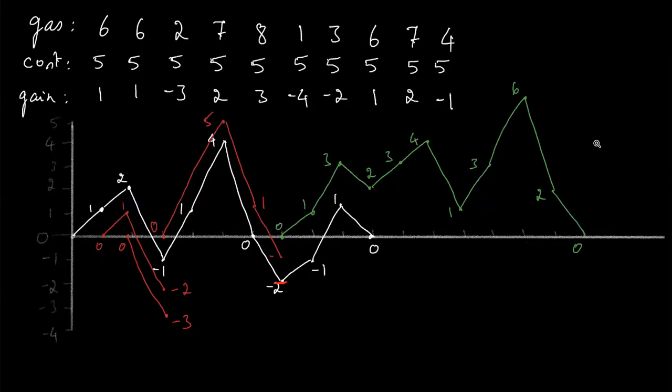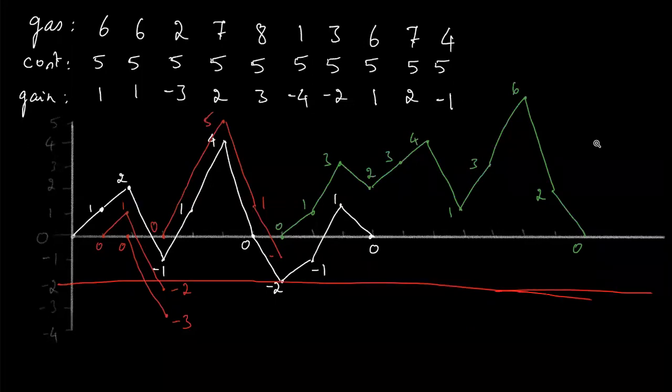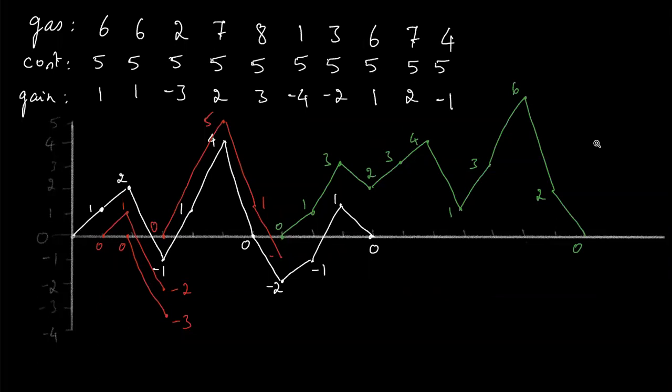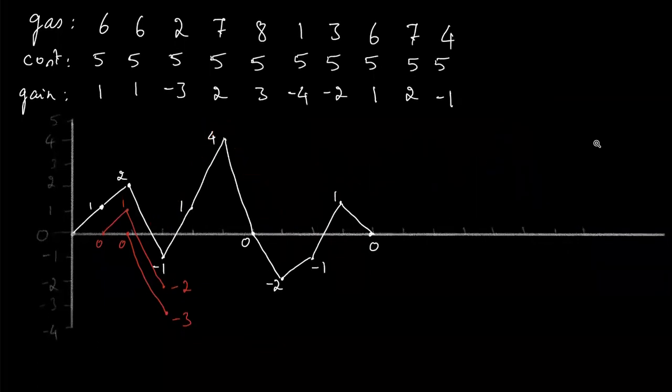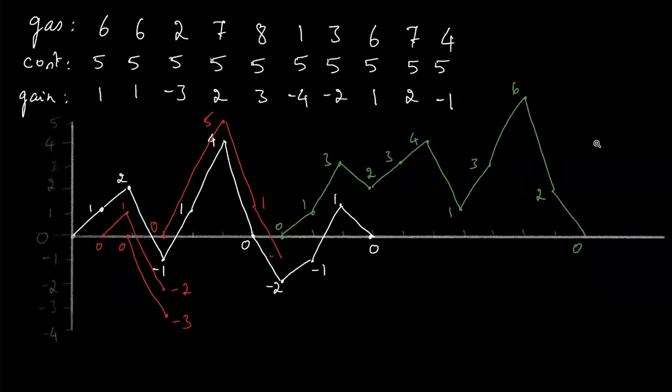Whenever the total gas is greater than or equal to total cost, there is always a solution. If you look at the cumulative gain curve starting from zero, wherever the lowest point is — the deepest point — if you start from there, the curve will always be greater than or equal to zero, never negative. All we need to find is the index of that deepest point, and that is the starting gas station.